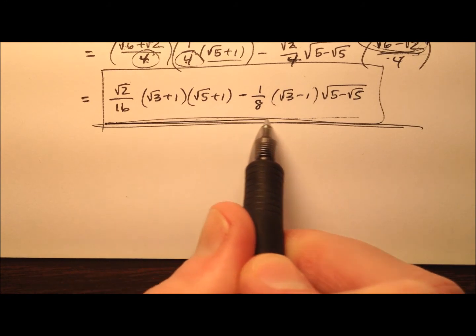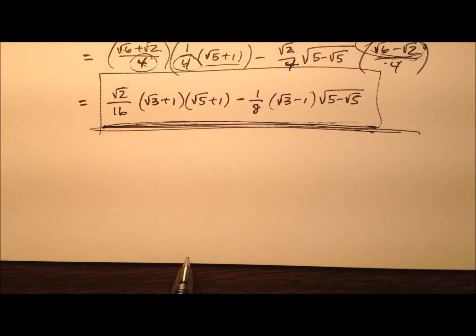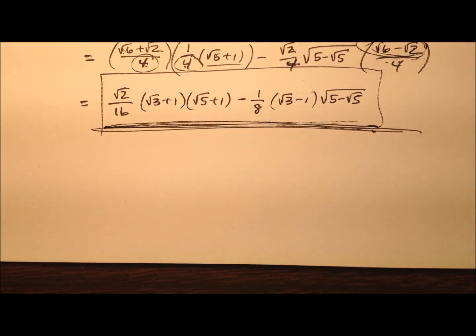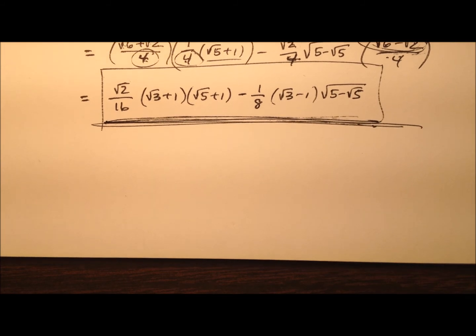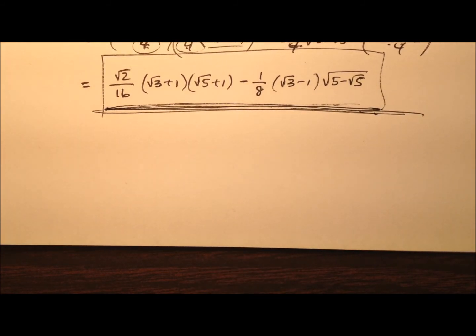So we have this expression and I have stated that this is the exact value for the sine of 39 degrees. No decimals, no rounding, just a couple of irrational numbers that have been subtracted from one another. So let's go ahead and use a calculator and see if indeed this works.